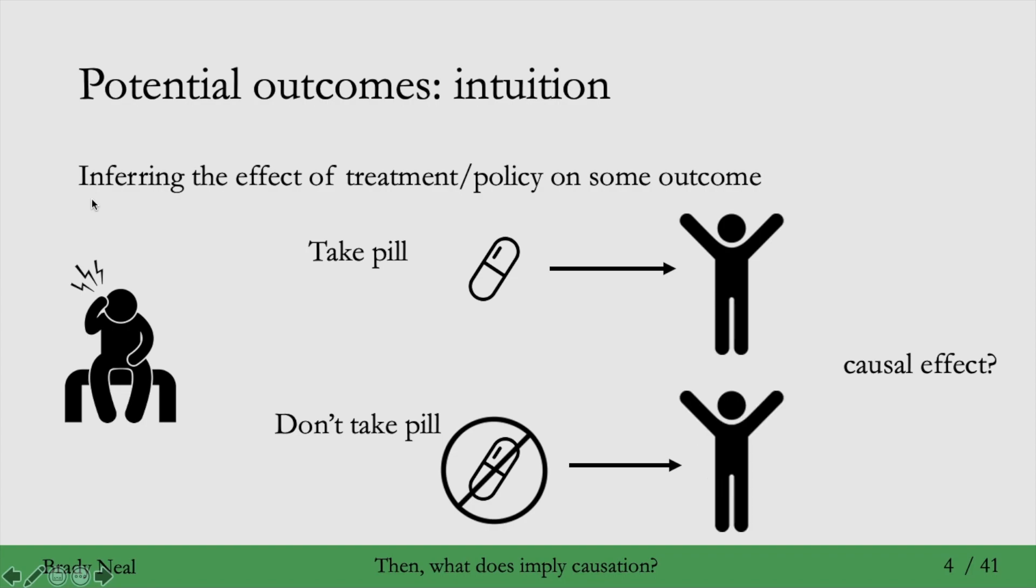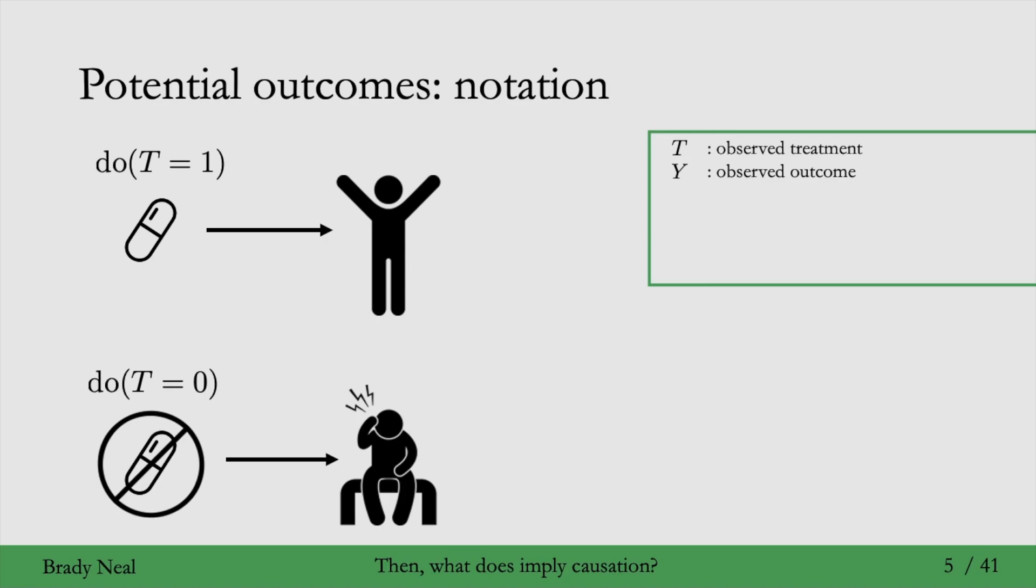But what if when you don't take the pill, your headache still goes away? Then would you say that the pill has a causal effect on your headache? Probably not. Then it doesn't seem like the pill caused your headache to go away. So that was the basic intuition for potential outcomes, and now we'll get a bit more specific with some notation.